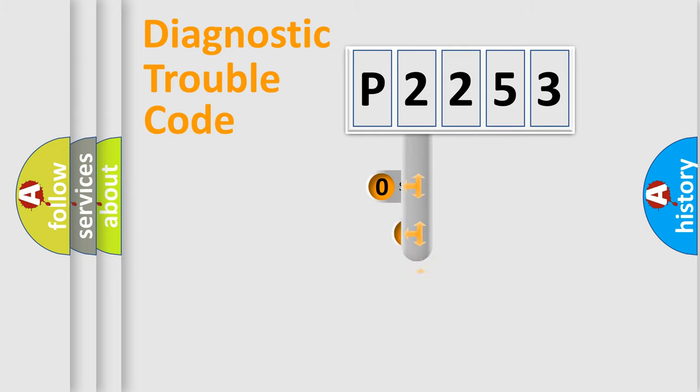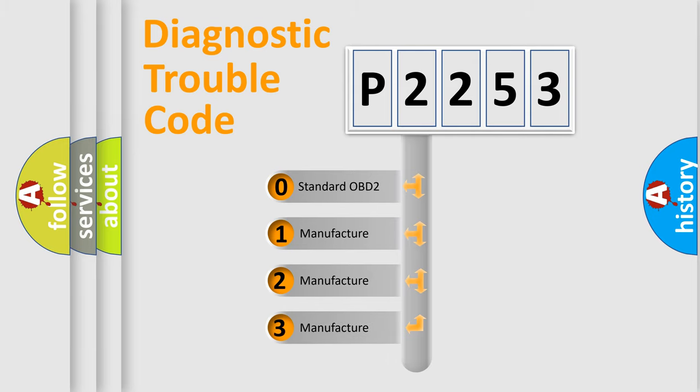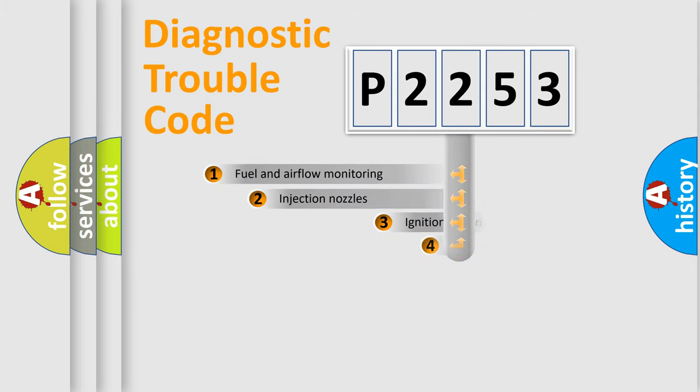This distribution is defined in the first character code. If the second character is expressed as zero, it is a standardized error. In the case of numbers 1, 2, or 3, it is a more prestigious expression of the car-specific error.